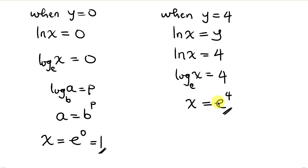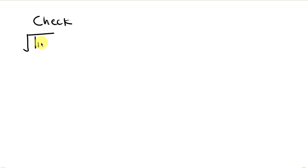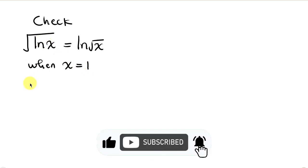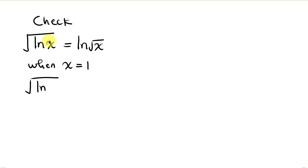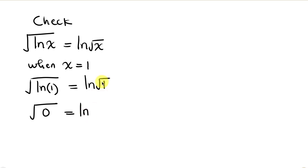Let's check our answers. The given equation is √(ln x) = ln(√x). Testing x equals 1: the left side is √(ln 1) = √0 = 0, and the right side is ln(√1) = ln 1 = 0. The left equals the right, confirming x equals 1 is a solution.